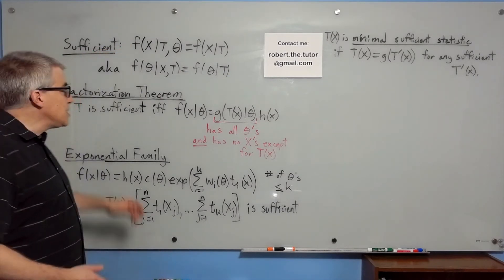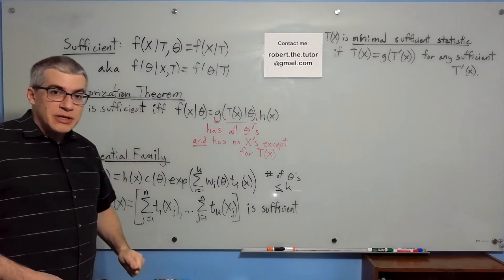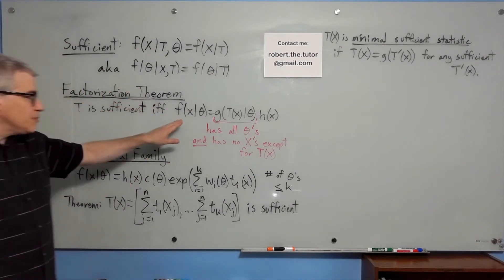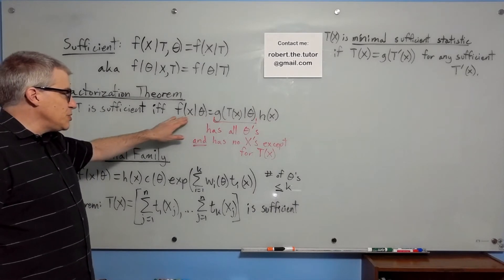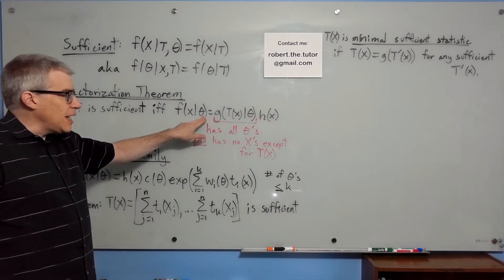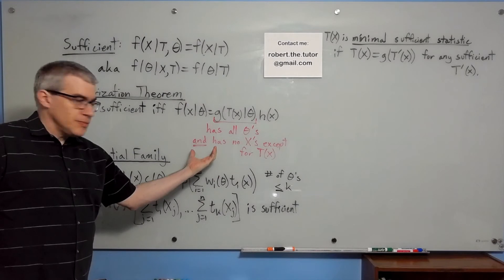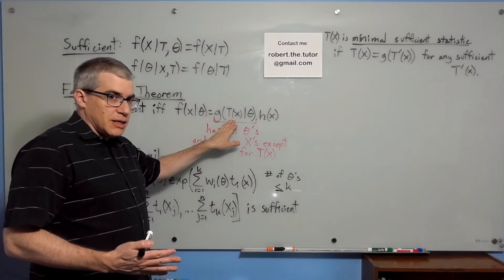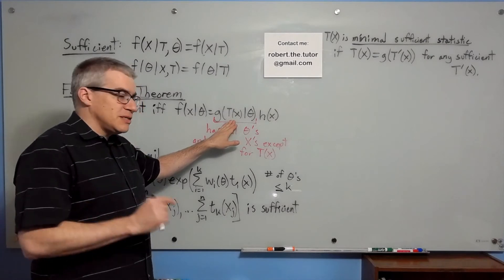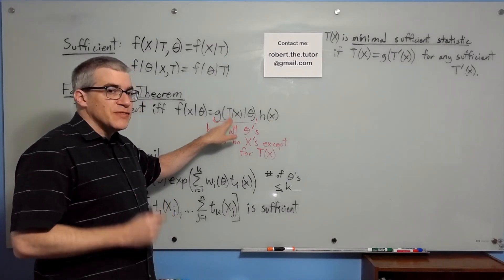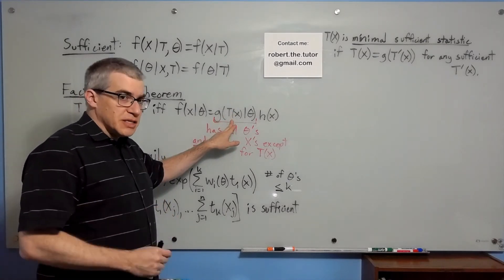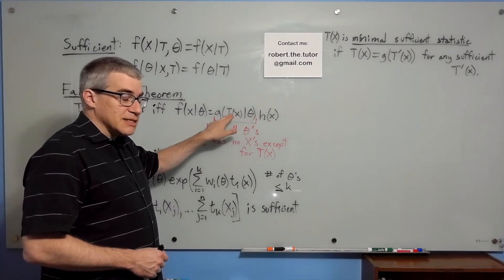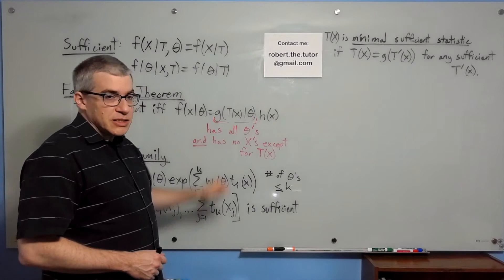If you're not using the definition directly, how do you tell whether something is sufficient? There are two helpful theorems. The first is the factorization theorem: take the conditional distribution of x given theta, factor out all the thetas into one function, and that function will have some x's in it. If the only x's it has are in the form of the statistic, then the statistic is sufficient. If you have any other x's besides the statistic, then it's not sufficient.